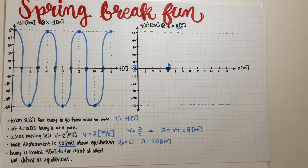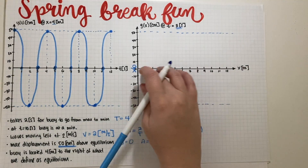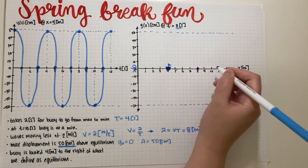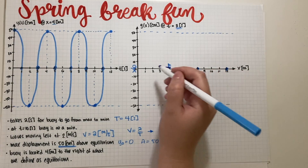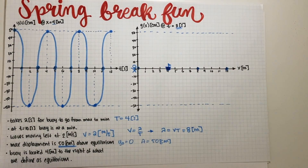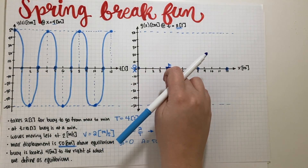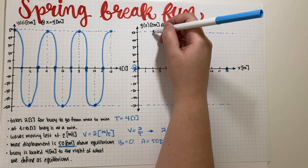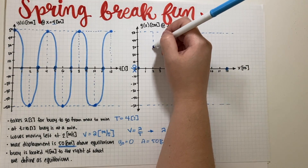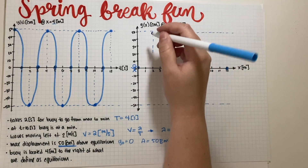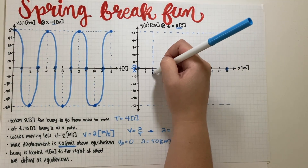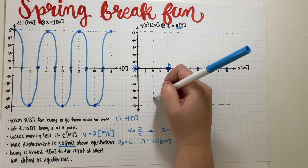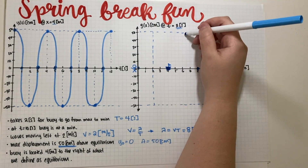With a wavelength of 8 meters, the zero-crossings on the spatial graph occur every 4 meters (half a wavelength), and the maxima and minima occur every 8 meters — at x = 0, 4, 8, etc. being either crossings, maxima, or minima depending on the phase.